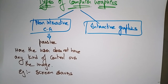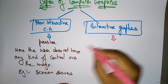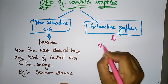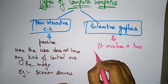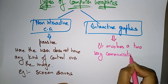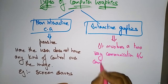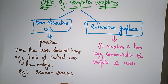Now coming to interactive graphics — what do we call interactive graphics? It involves a two-way communication between the computer and the user. So there is a two-way communication between the computer and user. We can say interactive graphics is not passive.